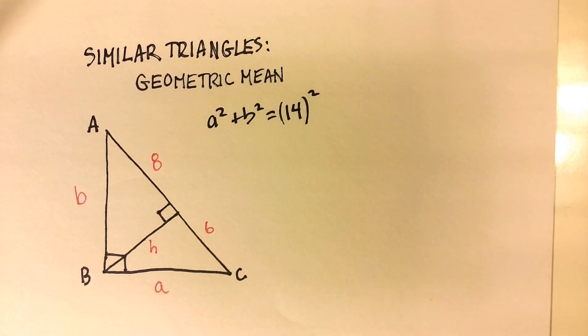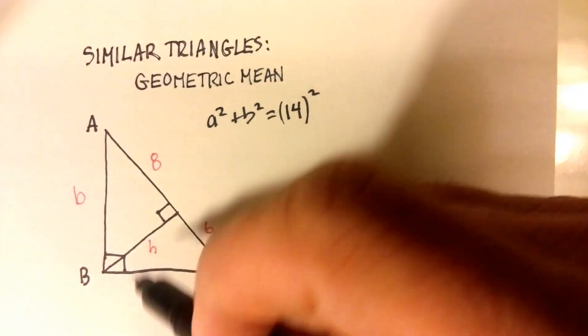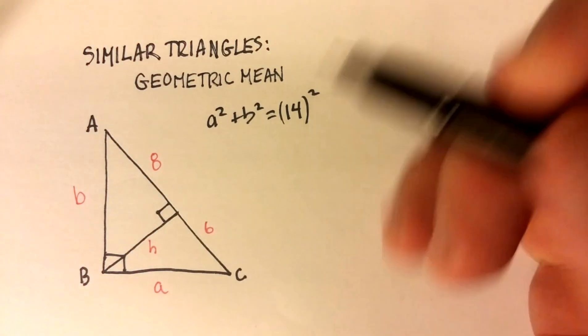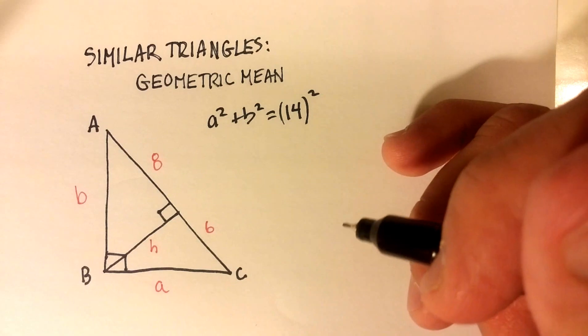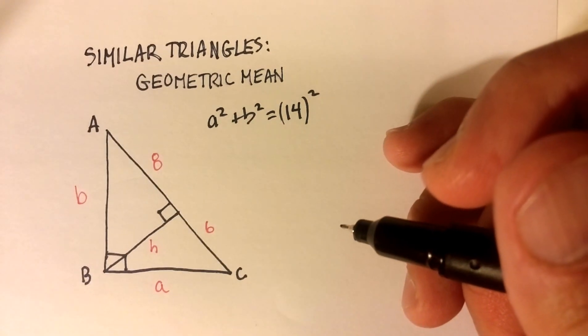Now, we know that similar triangles have proportional lengths. So we could say something like, the side here, 14 is to A, and that's hypotenuse is to short leg.